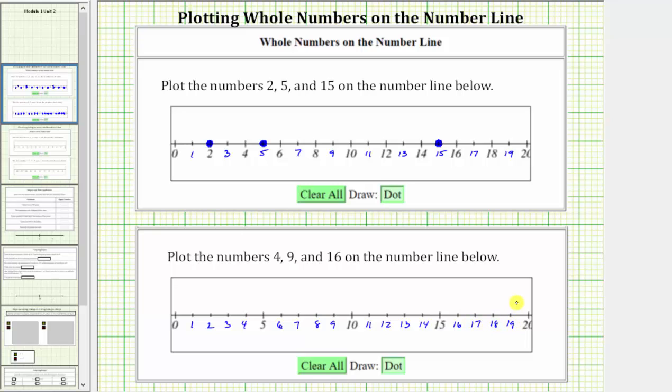And now to plot the numbers, four is located four units to the right of zero, which is here. Nine is nine units to the right of zero, located here. And finally, 16 is 16 units to the right of zero, located here.